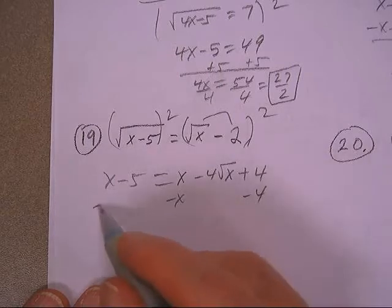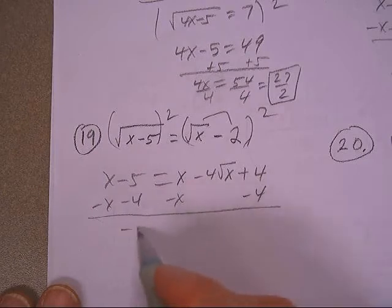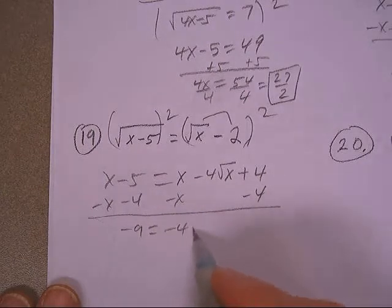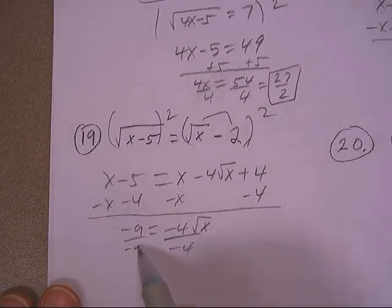Now let's subtract x and subtract 4 on both sides. And I get negative 9 is negative 4 square root of x. Let's divide both sides by negative 4.